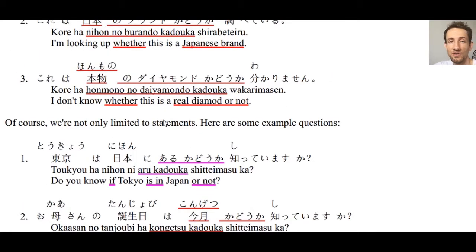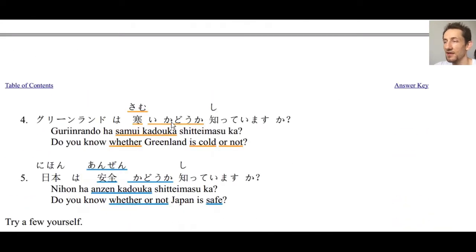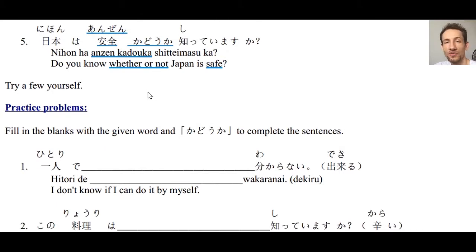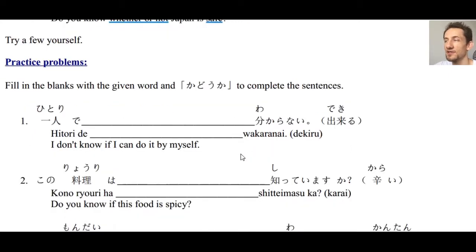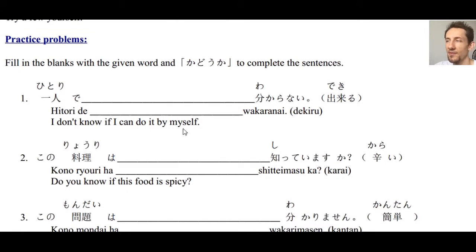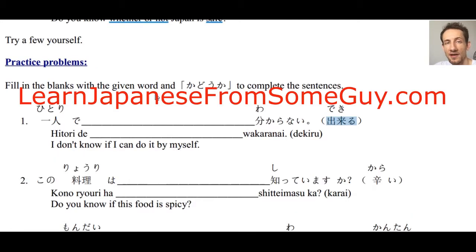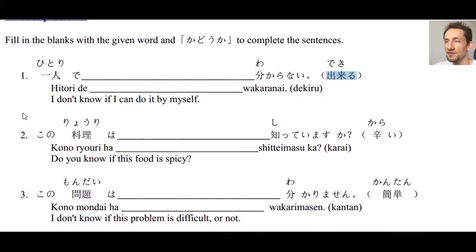We can make statements or questions, use different verbs instead of わかる/わからない — basically any sentence you can make, you can use かどうか. Now we're going to fill in the blanks to make sentences using かどうか. Some will be questions, some statements. For example: 'I don't know if I can do it by myself' — we have ひとりで and we need to fill in the blank with かどうか. You can go to LearnJapanesefromsomeguy.com, print out the PDF, and write down your answers — the more you write, the better.